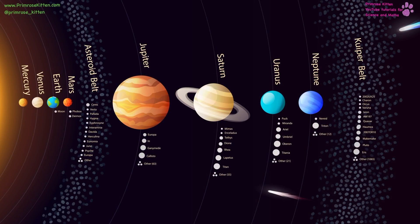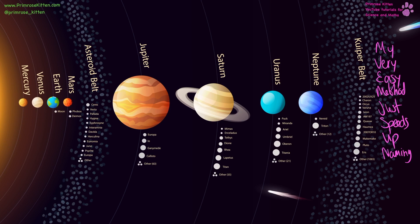Our solar system is a beautiful, varied and fascinating thing. Starting with the sun all the way over here, we move through Mercury, Venus, Earth, Mars and our moons, the asteroid belts with some dwarf planets in, Jupiter, Saturn, Uranus, Neptune, and poor Pluto down here which isn't a planet anymore — it's just a dwarf planet. To help you remember the order, we have the mnemonic: My Very Easy Method Just Speeds Up Naming. It used to end with 'planets' but since Pluto isn't a planet anymore, it now just ends with 'naming.'